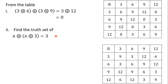The next part of the question says we should use our tables to find the truth set of n times (n plus 3) equals 3. We drew addition and multiplication tables for mod 15 on the set {3, 6, 9, 12}. There are some values in this set that will satisfy this equation. To find those values, we are going to try them out one after the other.